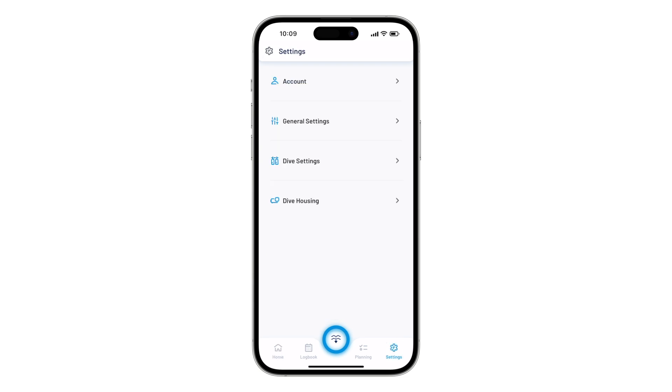By selecting settings, dive settings, scuba, then gas, you can choose the right mix. If choosing nitrox, select nitrox, then select the FO2 or oxygen percentage of the gas.